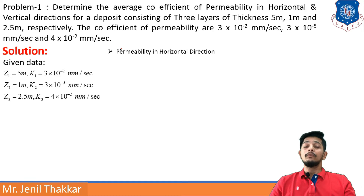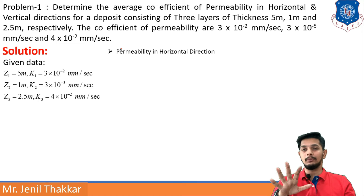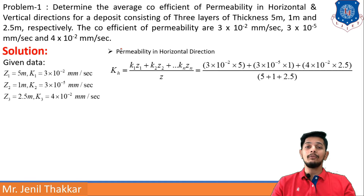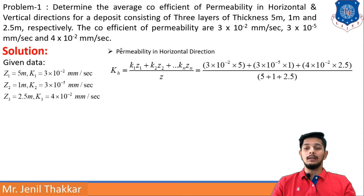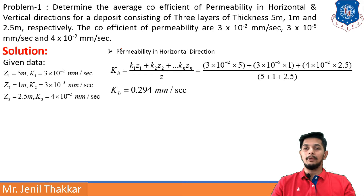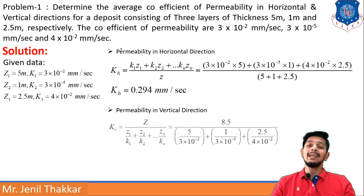For calculation of kh and kv we have the formulas — you have to remember those. The formula for horizontal permeability kh = (k1·z1 + k2·z2 + ... + kn·zn) / z_total. Putting all the given values, we get kh = 0.294 mm/s.